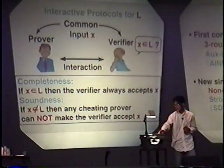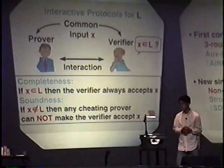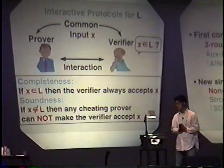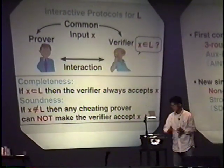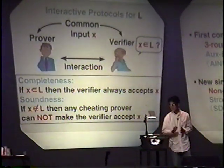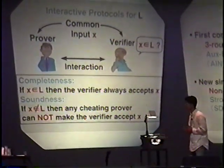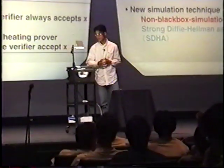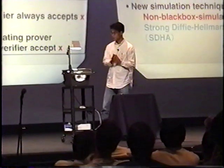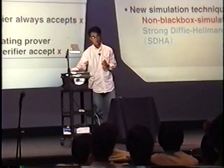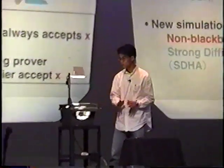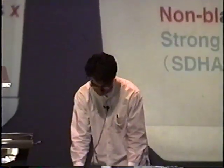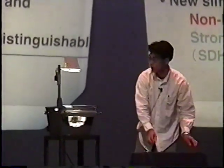The completeness means if X belongs to language L, then the Verifier always accepts X. And the soundness requires, if X does not belong to language L, then any cheating prover cannot make the Verifier accept X. So the probability that the Verifier accepts is very small, and it is negligible.